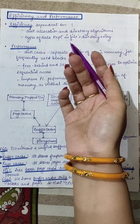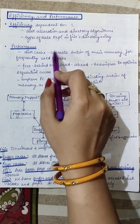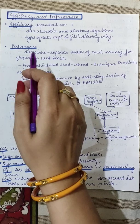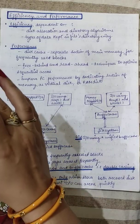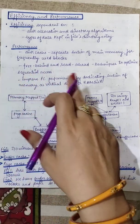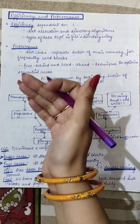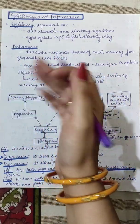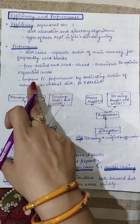Performance depends on disk cache, which is a separate section of main memory for frequently used blocks. It usually stores the frequently accessed data. There are also free-behind and read-ahead techniques used to optimize sequential access — freeing the back data blocks and reading the forward blocks. You can also improve PC performance by dedicating a section of memory as a virtual disk.